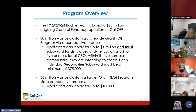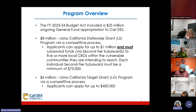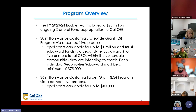The FY23-24 Budget Act included a $25 million ongoing general fund appropriation to Cal OES for the Listos California Statewide Grant LS Program via a competitive process. Applicants can apply for up to $1 million and must subaward via second-tier subawards to five or more local CBOs within the vulnerable communities they are intending to reach.